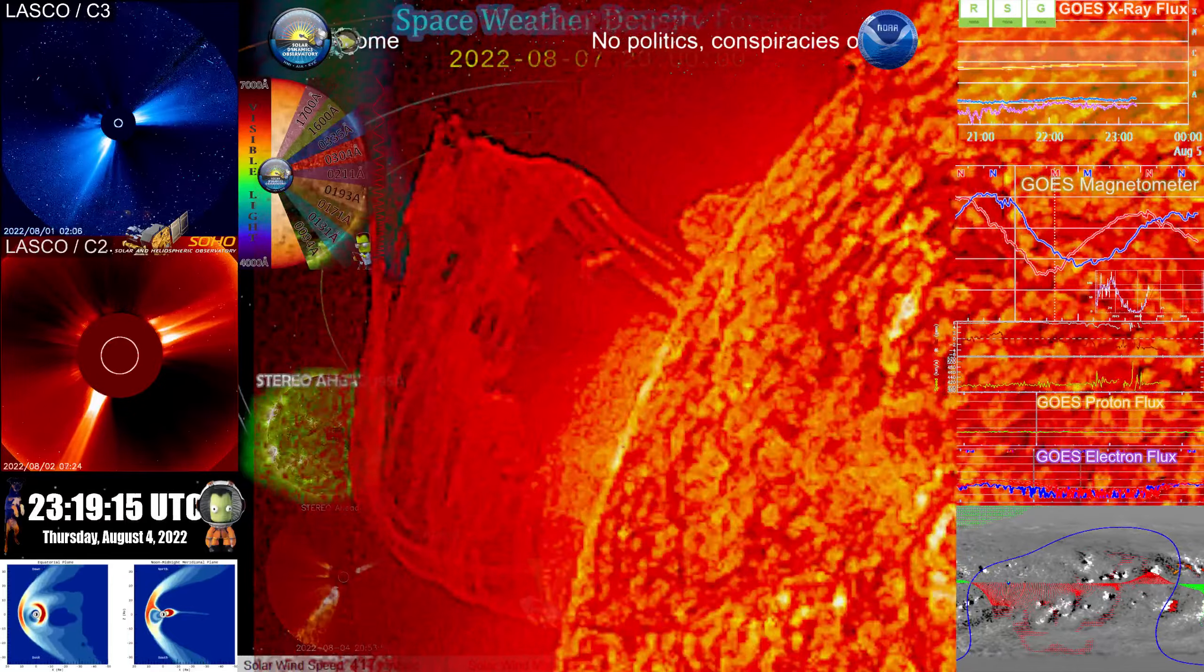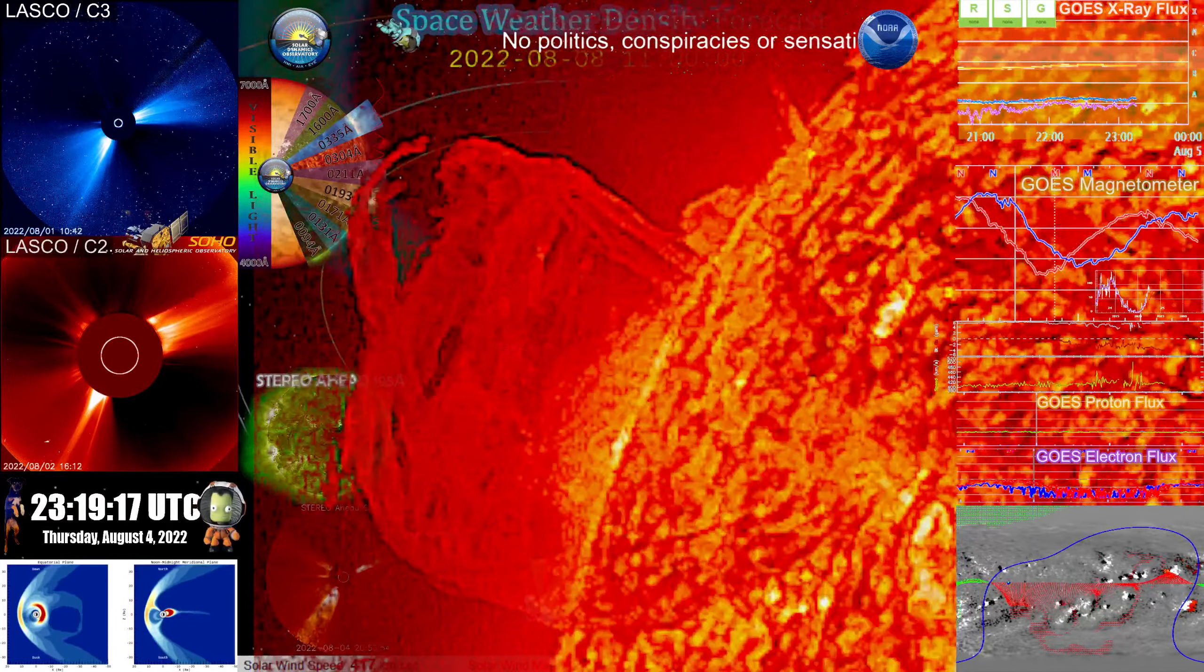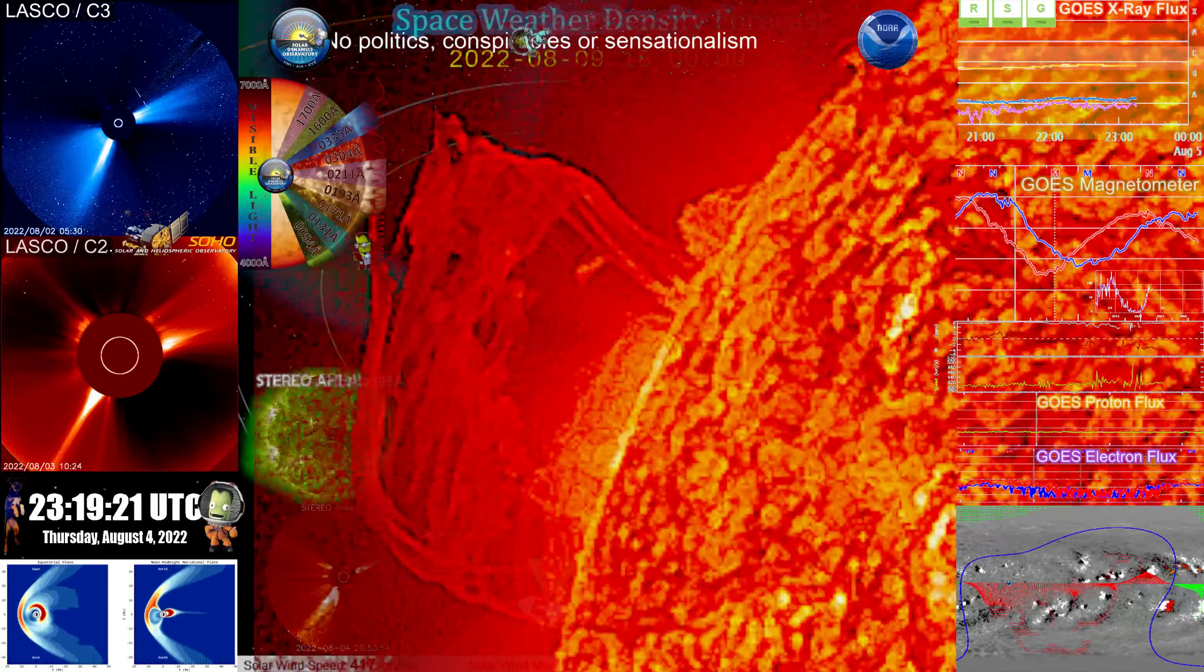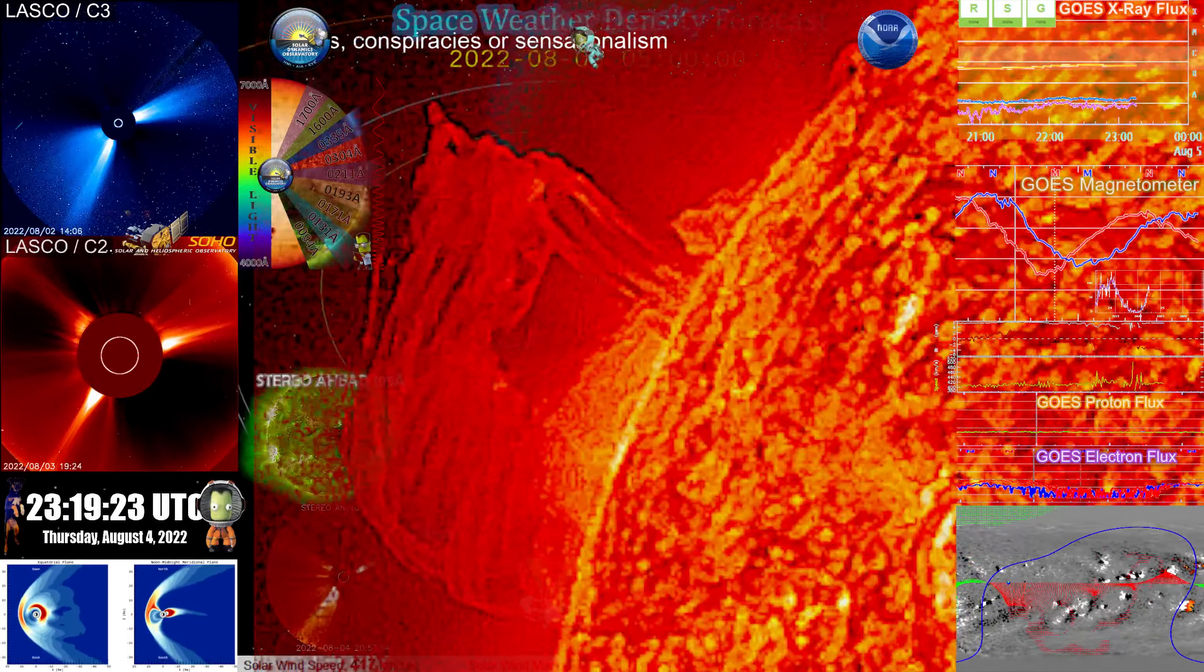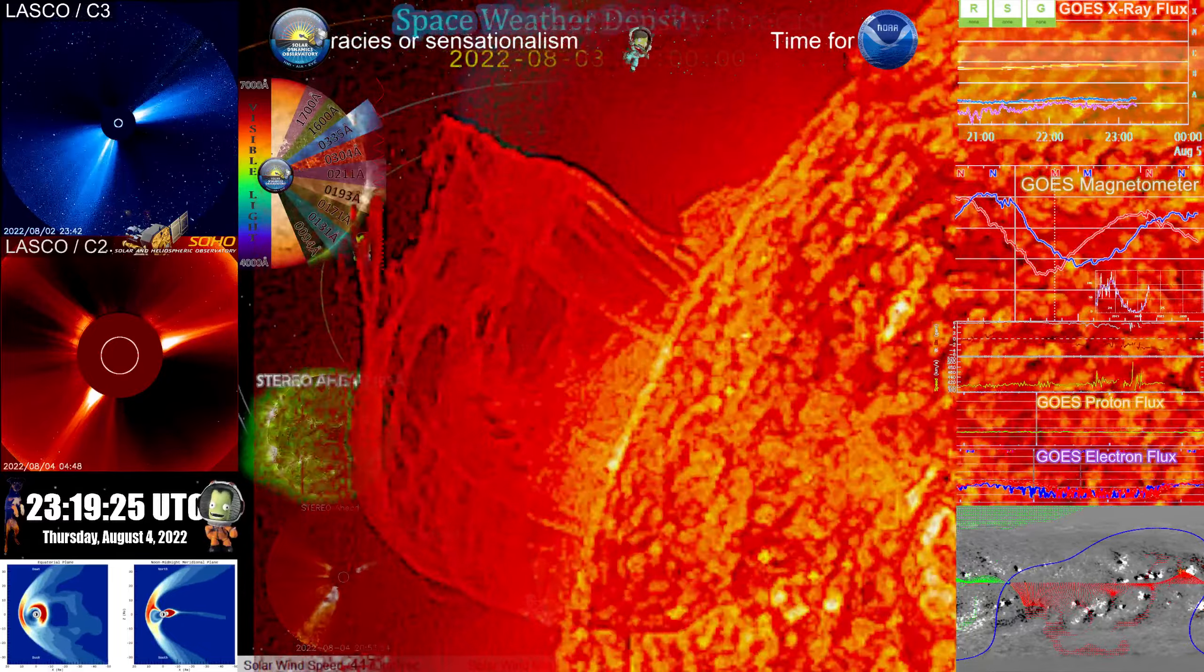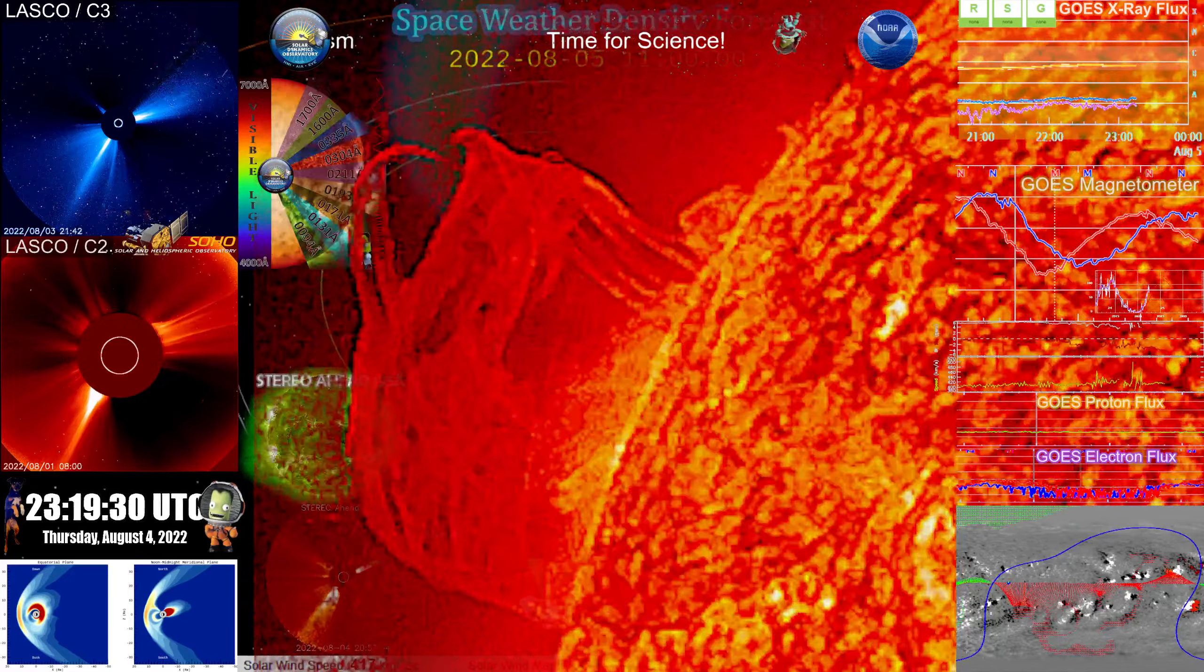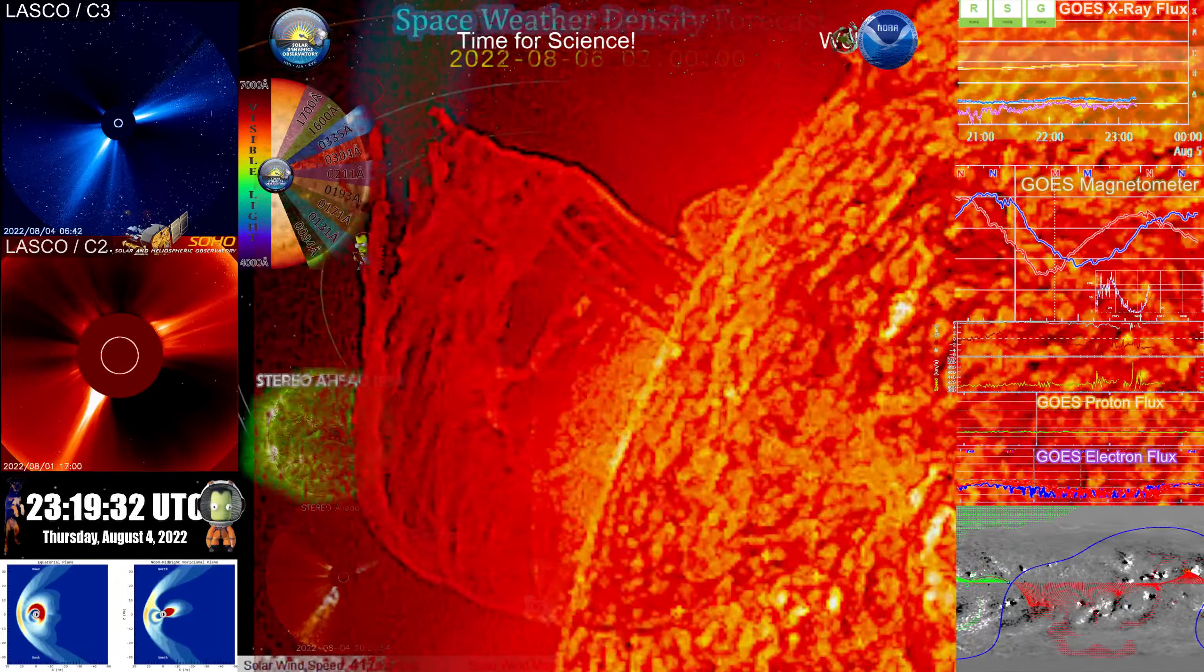But if this does erupt to the point where we have a massive CME from this, this is something that they would say, okay, we would have a power outage that could impact things very significantly. We can see Internet outages very significantly. This is this kind of event.